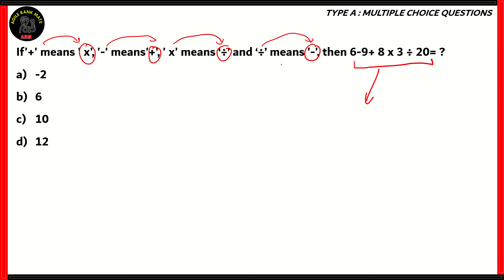6 minus 9. Minus represents plus, so therefore you have 6 plus 9. 9 plus 8 is supposed to mean 9 into 8. 8 into 3, since multiplied by represents division, so 8 divided by 3. Finally, 3 divided by 20 in the question, divided by stands for minus, so therefore you have minus 20. So this is what we need to solve.